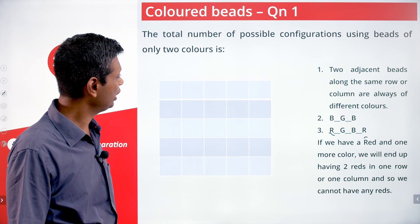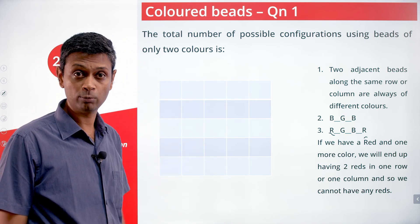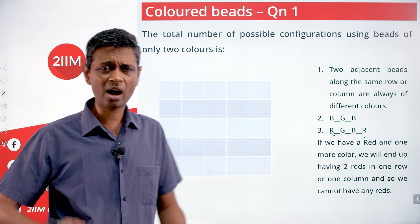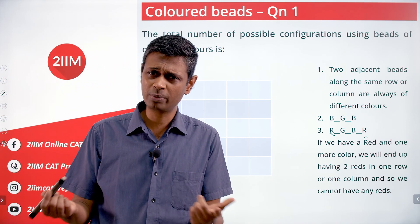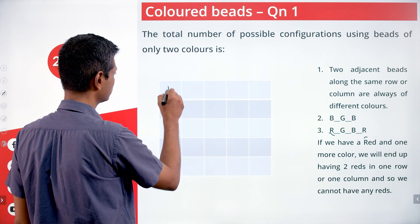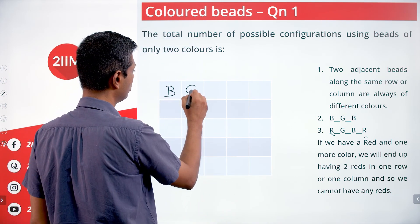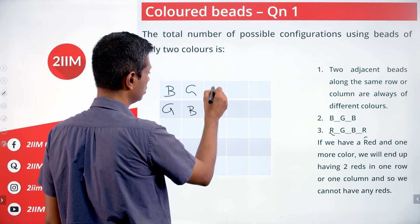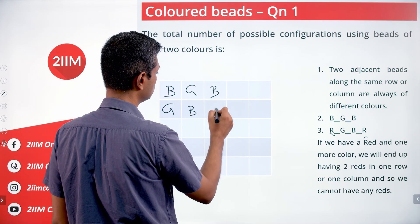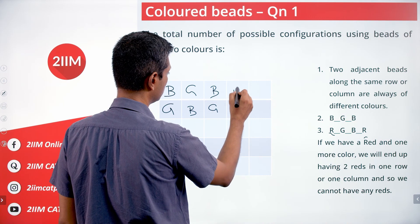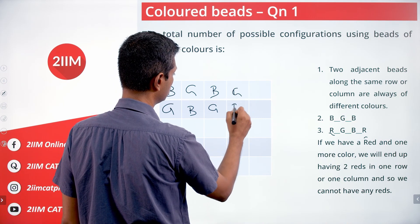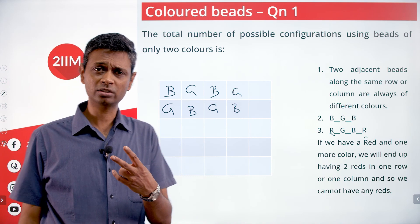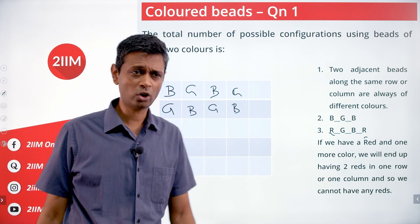The only two colors that can work together are blue and green. With only blue and green, every adjacent bead must be different, so the pattern must strictly alternate. If the first cell is blue, it writes itself: blue, green, blue, green, blue, and so on. There are no other valid options — nothing else is possible.